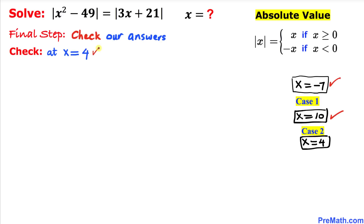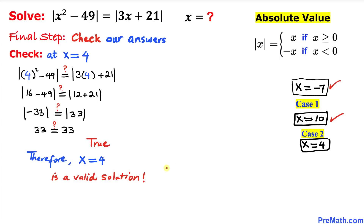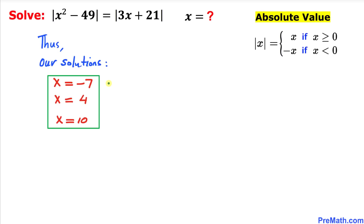Finally, checking x equals 4, we substitute and get 33 equals 33 — a true statement, so x equals 4 is a valid solution as well. Thus our three solutions are x equals negative 7, x equals 4, and x equals 10. Thanks for watching, and please don't forget to subscribe to my channel for more exciting videos.